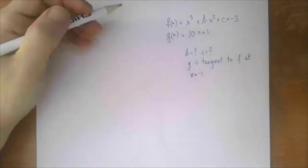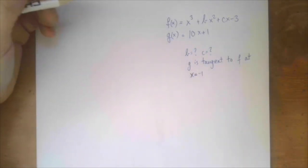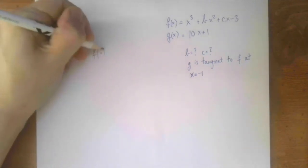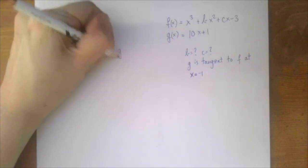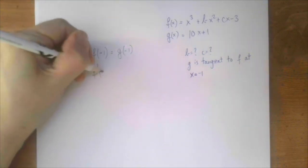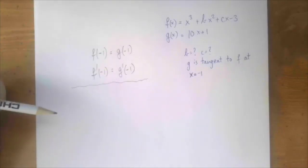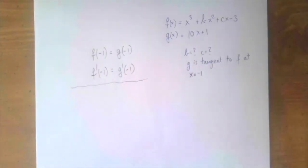At the point of tangency, there are two levels of agreement between the two functions: f(-1) = g(-1) and f'(-1) = g'(-1), which is the slope. That should give us two equations, which is what we need for two unknowns.